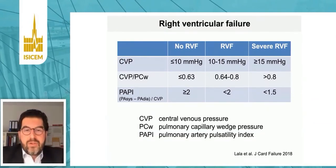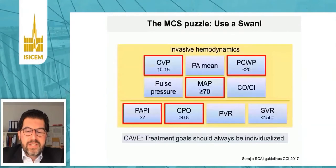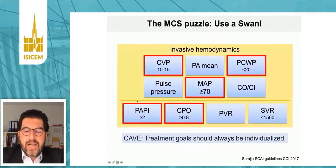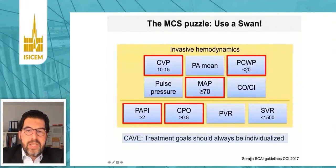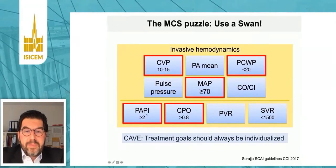Even though treatment goals should be individualized depending on the device used, the patient, comorbidities, and the underlying condition, you can state some rough rules guided by PA catheter measurements. For example, maintain a mean arterial pressure of 70 or above, control pulmonary capillary wedge pressure below 20 or even lower, maintain central venous pressure between 10 and 15 mmHg, and keep PAPI and CPO above 2 and 0.8, respectively, depending on the disease state and MCS device used.